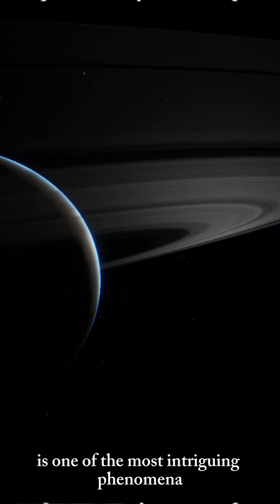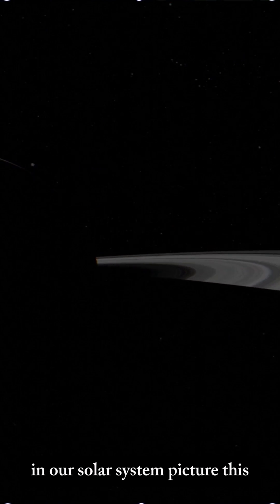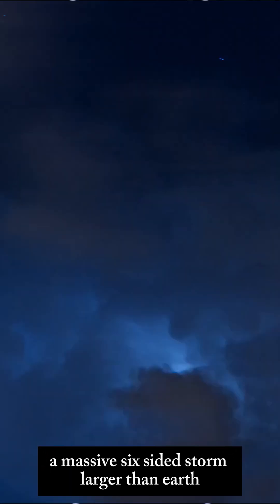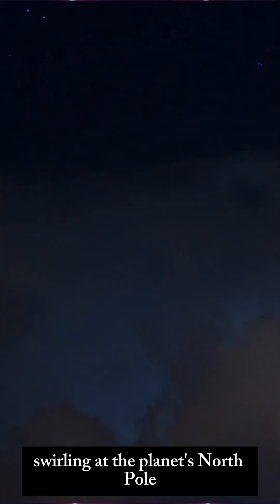Saturn's hexagon is one of the most intriguing phenomena in our solar system. Picture this: a massive six-sided storm larger than Earth, swirling at the planet's north pole.